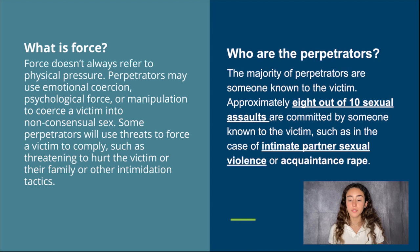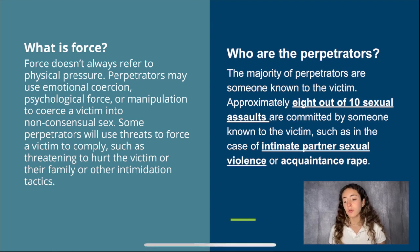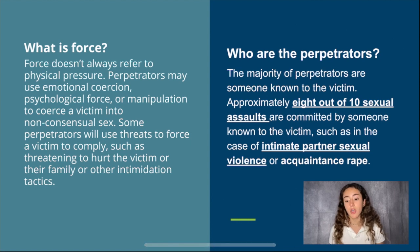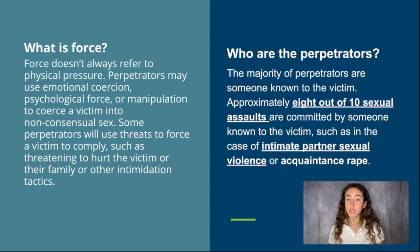Who are the perpetrators? The majority of perpetrators are someone known to the victim. Approximately eight out of ten sexual assaults are committed by someone known to the victim, such as in the case of intimate partner sexual violence or acquaintance rape.